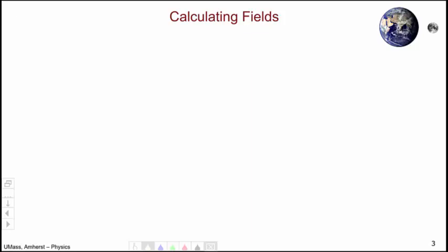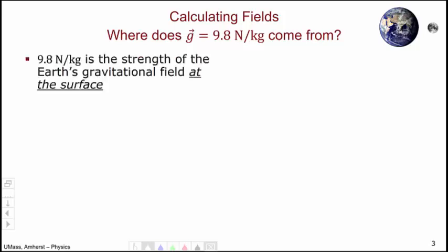Let's begin by calculating fields and thinking in terms of gravity using our experience from Physics 131. The question we're looking to answer is, where does this 9.8 newtons per kilogram value of g come from? 9.8 newtons per kilogram is the strength of the gravitational field from the Earth at the surface of the Earth.